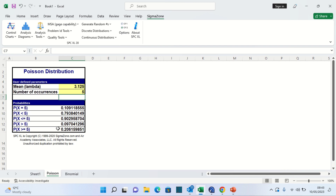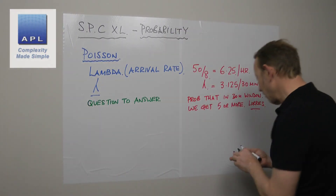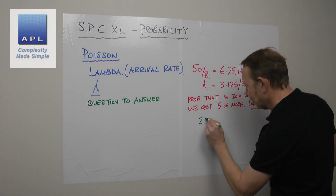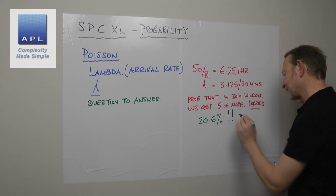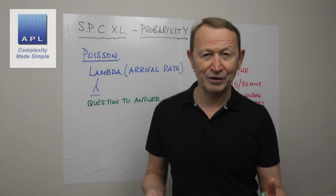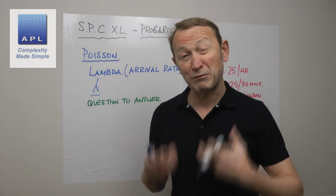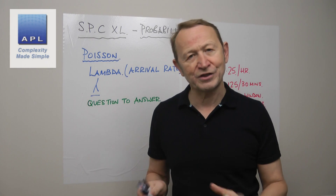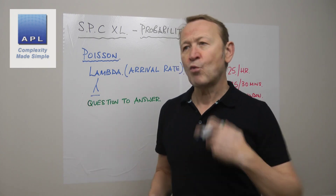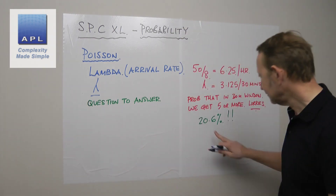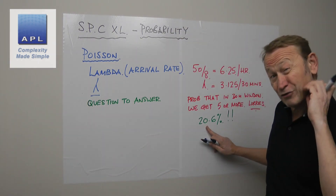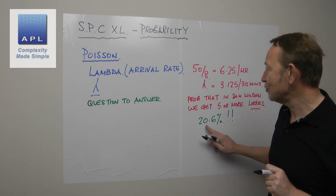Greater than or equal to five gives us the answer: 20.6 percent. So the probability of getting a queue is 20.6 percent. If you put in nine loading bays and ask what's the probability of 10 lorries coming, it's something like one chance in a thousand — meaning one day every three years we might get 10 lorries queuing. With four bays, we go from one day every three years to one day per week. This is not acceptable.